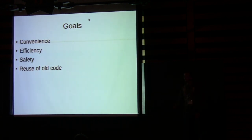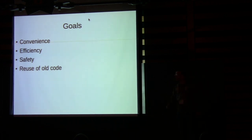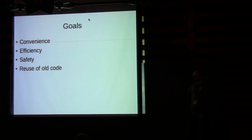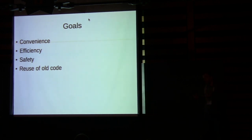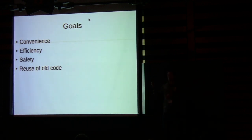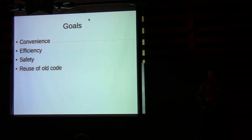So what's the goal of a range library? A range library will generally have four goals. We want it to be convenient — we don't want to write sort v.begin, v.end, we want to write sort v. We still want to be efficient; this is the C++ standard library, if the code doesn't match handwritten code, people will complain. It should be safe to use where possible. And if possible, we want to reuse existing code that uses the STL.